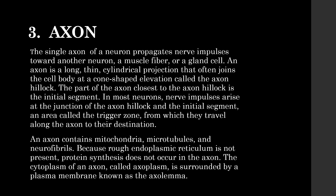Axons. The single axon of a neuron conducts nerve impulses towards another neuron, a muscle fiber, or a gland cell. An axon is a long thin cylindrical projection that often joins the cell body at a cone-shaped elevation known as the axon hillock. The part of the axon closest to the axon hillock is the initial segment. In most neurons, nerve impulses arise at the junction of the axon hillock and the initial segment, an area called the trigger zone, from which they travel along the axon to their destination.